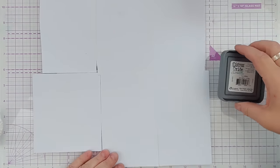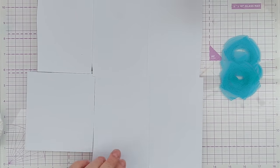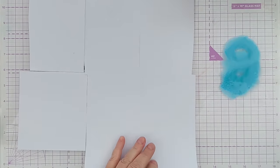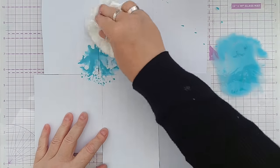I've got some broken china distress oxide here and I'm going to push that down to my mat, turn it into a paint with water and use my smosher to pick it up and smush it on.